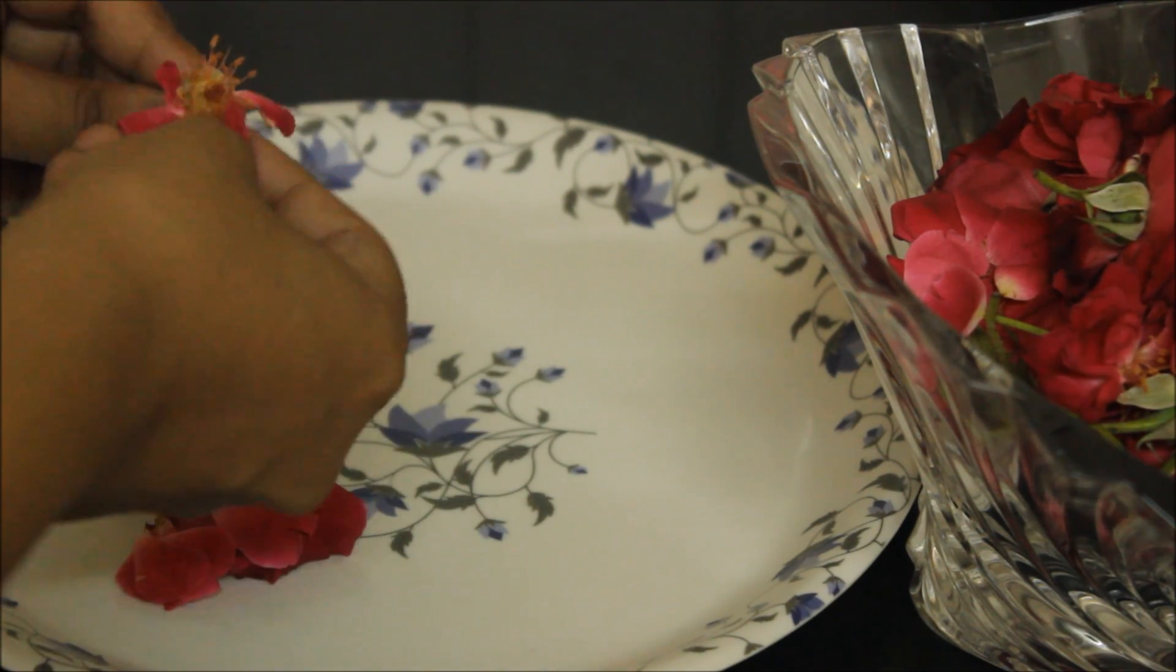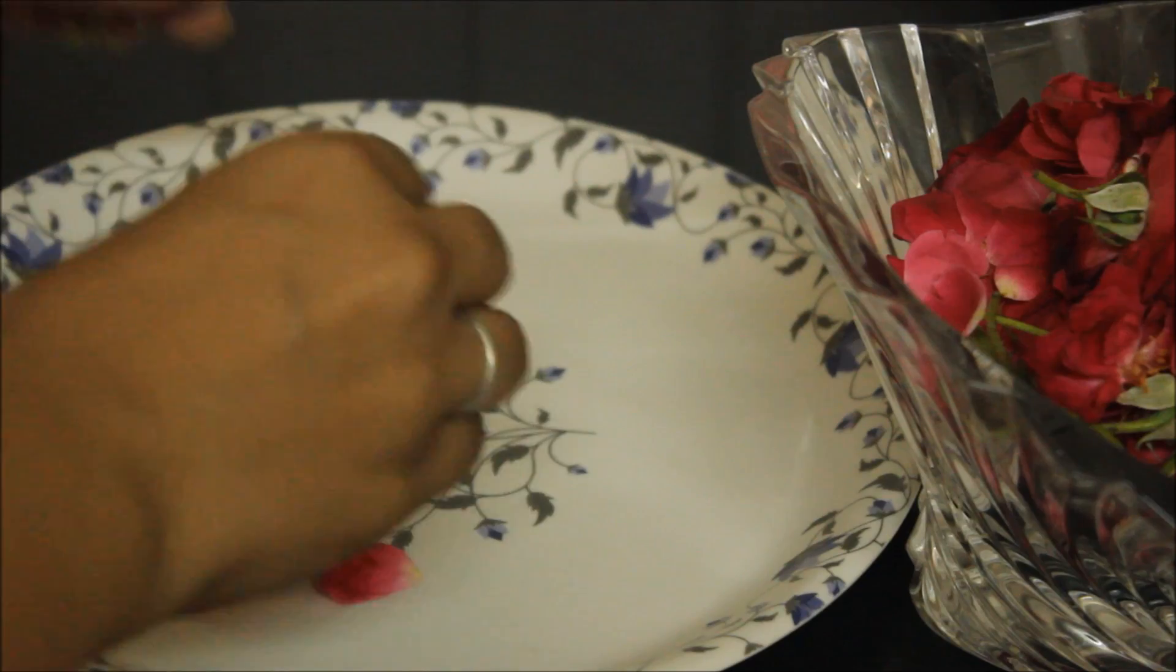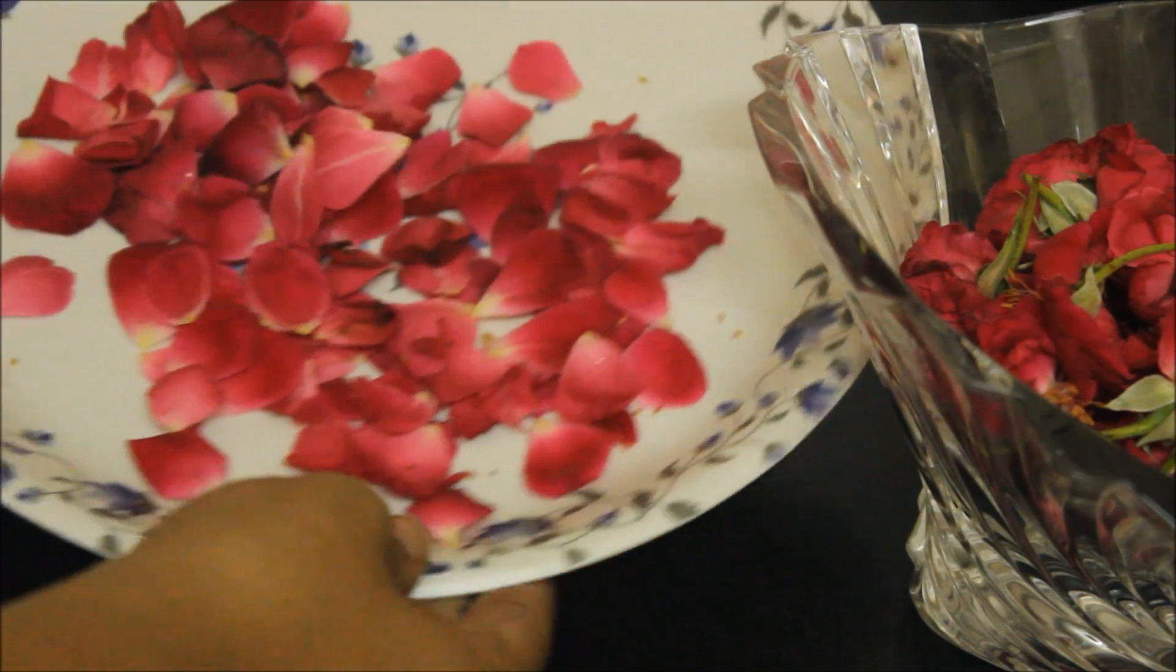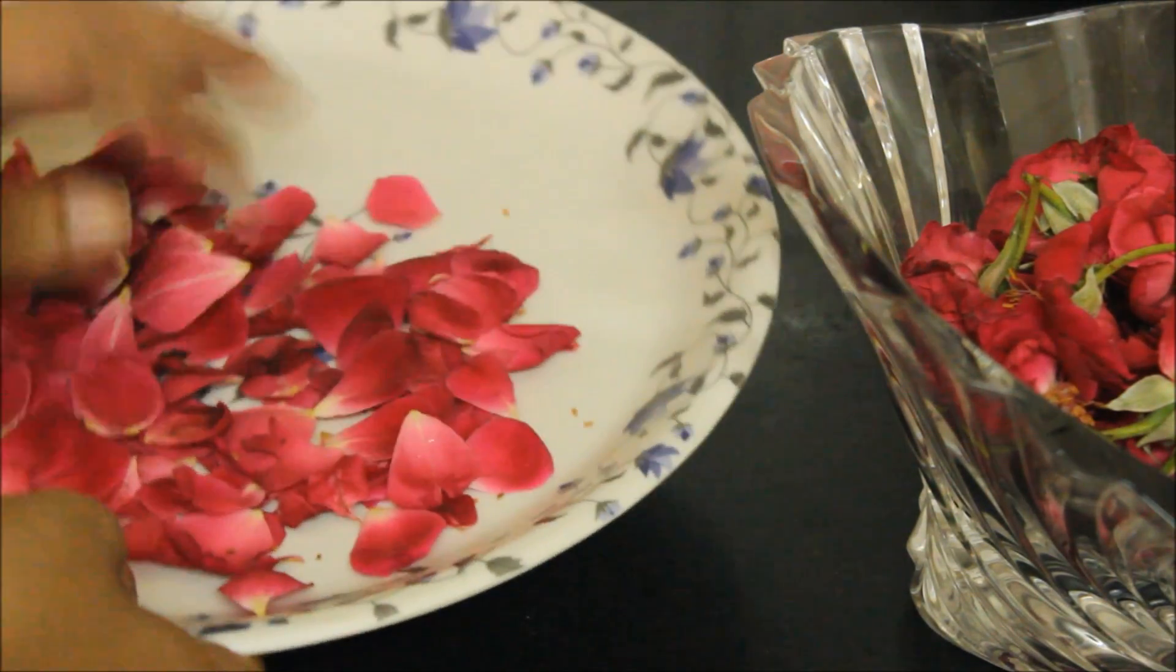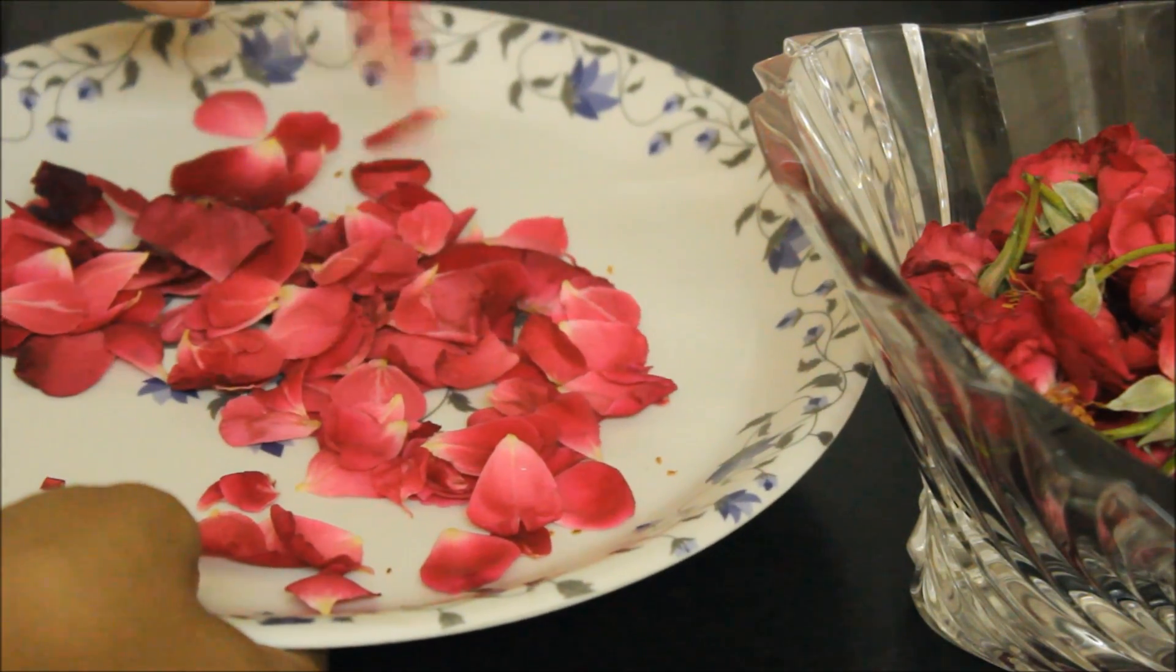Once you have your roses, pluck the petals off because you don't want the stem or the pollen part. You just want the petals, and make sure that you take off any damaged petals because you want good petals.